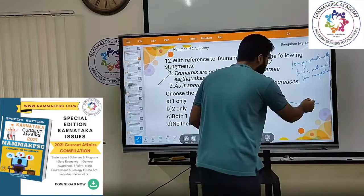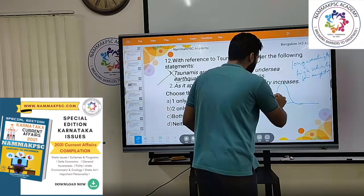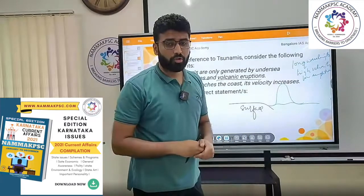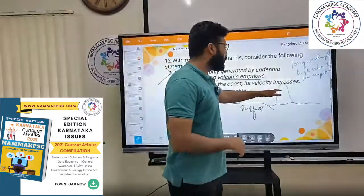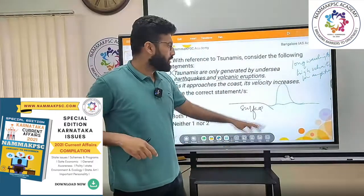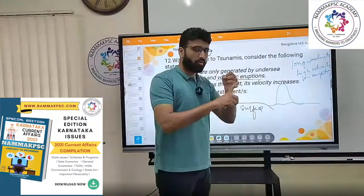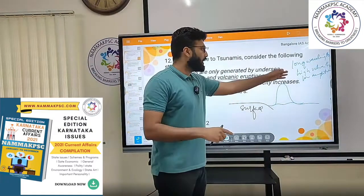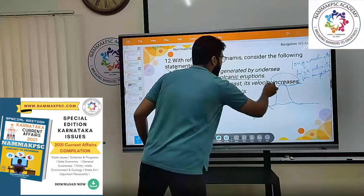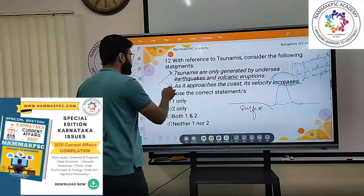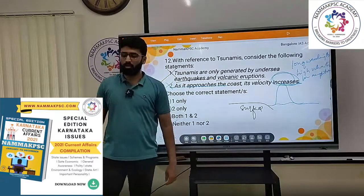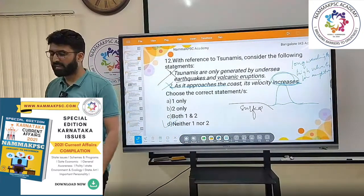When tsunami waves approach land they have a great height — about 3 to 4 or even 10 stories high. Remember: when it reaches the shore, it has short wavelength, low velocity, and high amplitude. So velocity decreases, not increases. Both statements are incorrect. Choose the correct statements: neither 1 nor 2. The answer is option D.